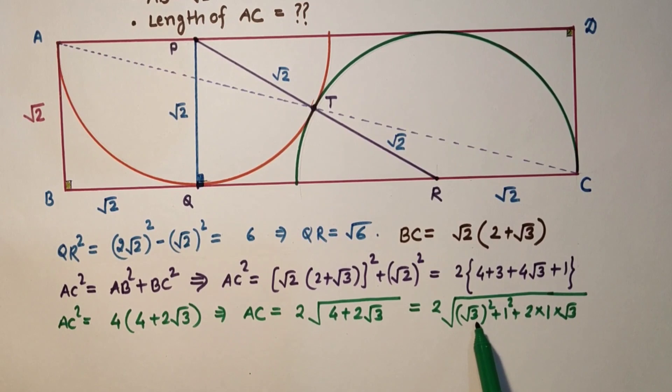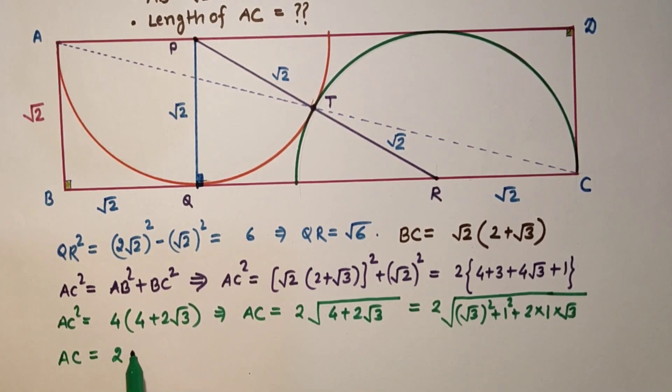This is A squared plus B squared plus 2AB type. So therefore AC is equal to 2 times the square root of root 3 plus 1 the whole squared.